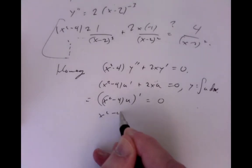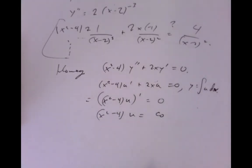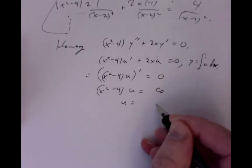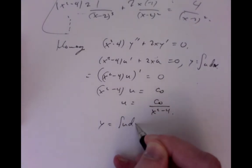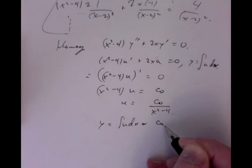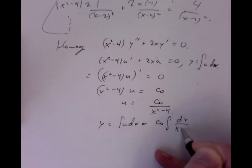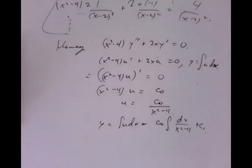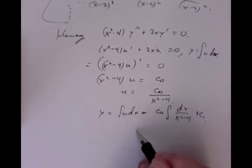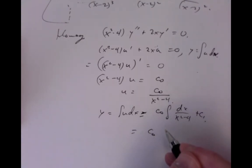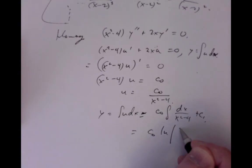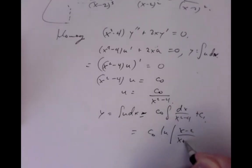The expression has to equal 0, so (x squared minus 4) times u must be some constant. Therefore u has to be that constant divided by (x squared minus 4), and then y has to be the integral of u dx — so it's the constant times the integral of dx over (x squared minus 4) plus a constant of integration. I'll leave you to carry out the integral, and just say that it is in fact a constant times the natural log of the absolute value of (x minus 2) over (x plus 2), plus a constant of integration.